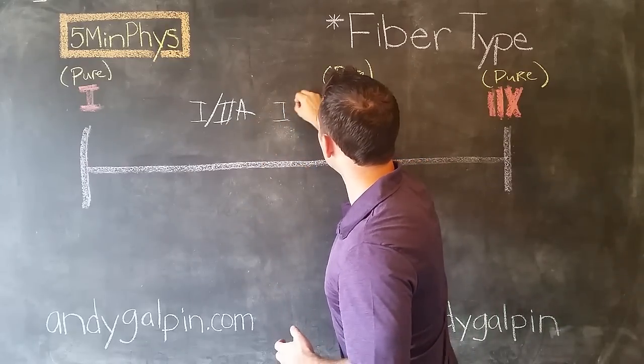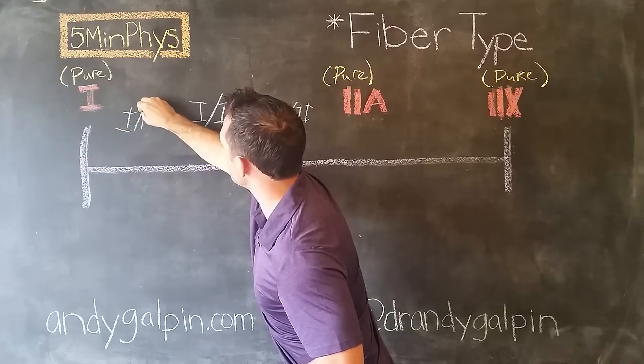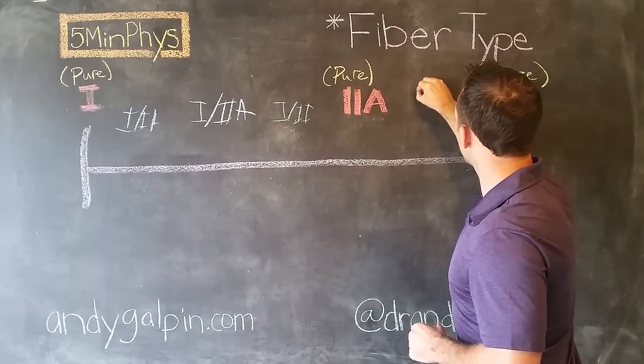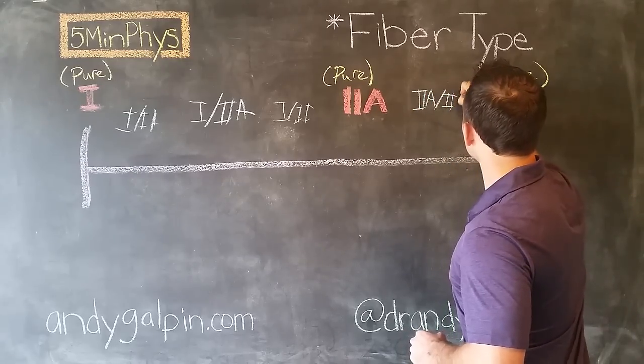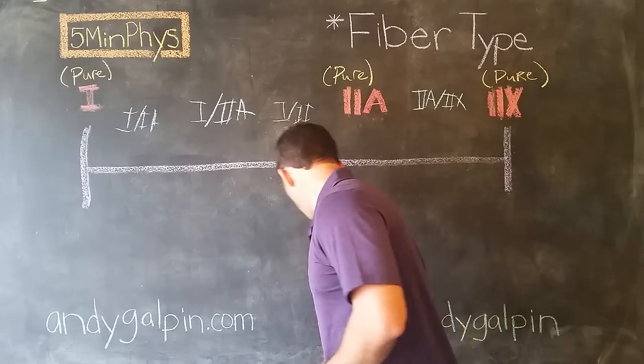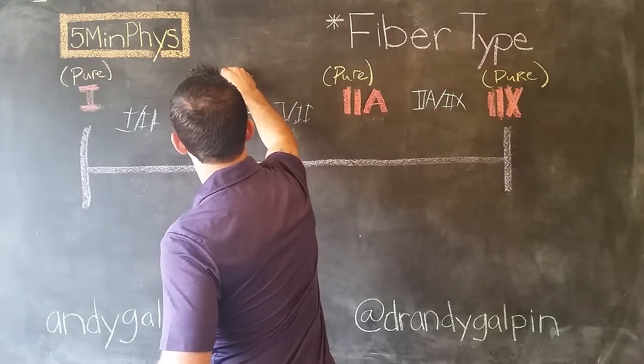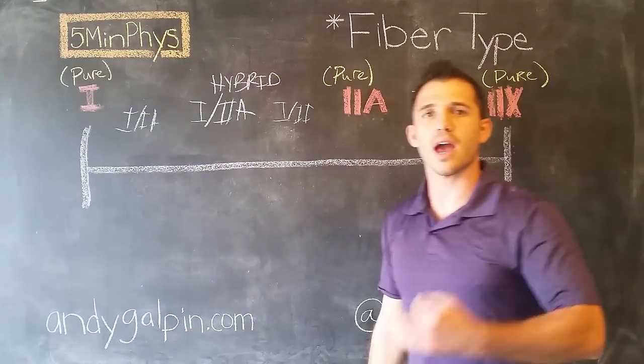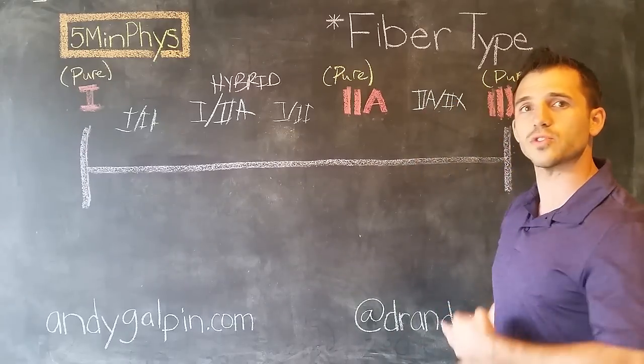It could be over here or over here. It would still be a little bit of both. We could have another hybrid over here, which could be a 2A and partially a 2X. We would call these, as I've been mentioning, hybrid fibers. Just like your automobile that's half gas, half electric, these things are half fast, half slow, or half fast, half mega fast, and so we call them hybrids.